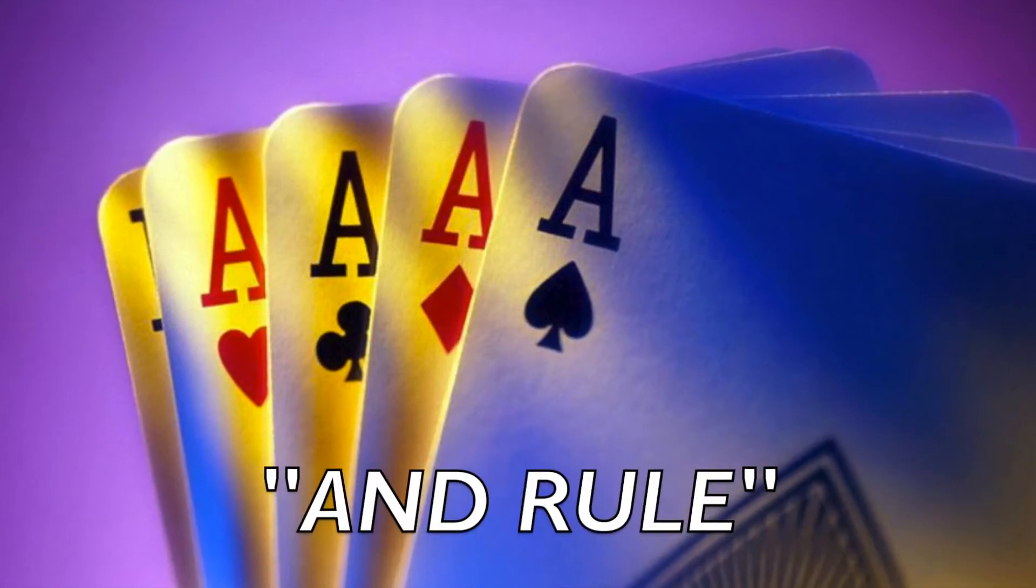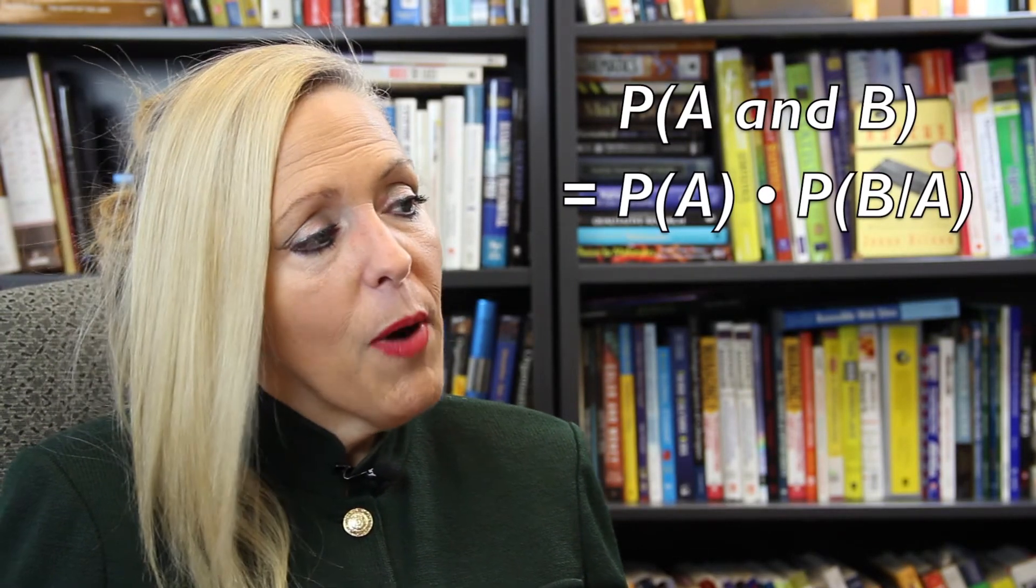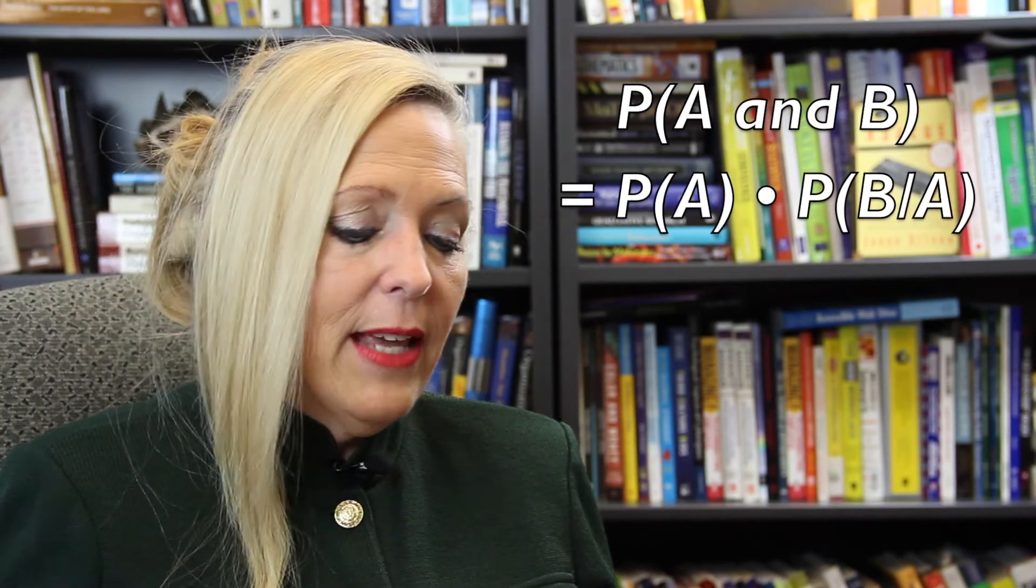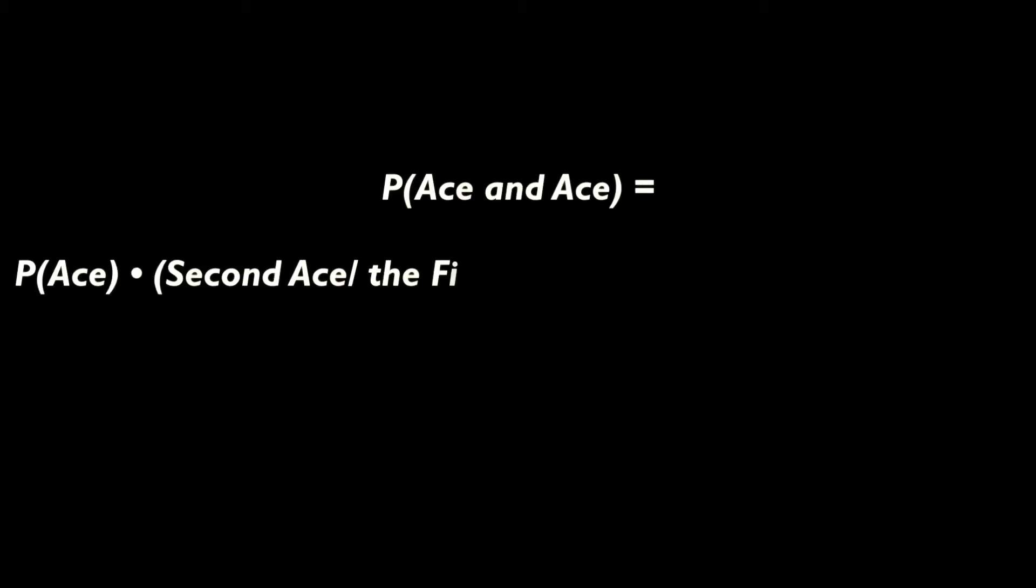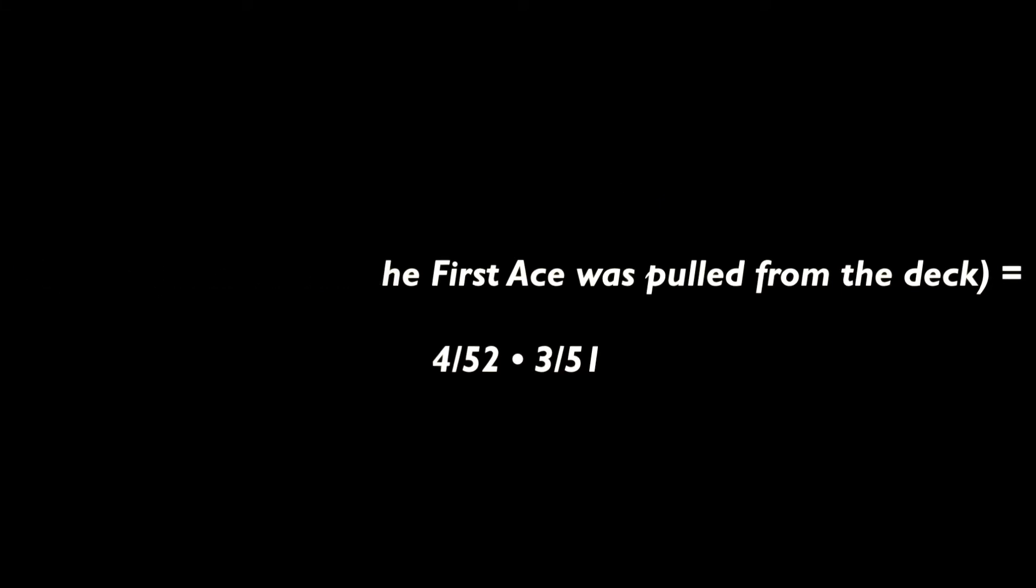Okay now, what is the probability of dealing two aces in a row? This requires the AND rule. The probability of A and B equals the probability of A times the probability of B given A. So the probability of getting an ace and then another ace is equal to the probability of getting an ace times the probability of getting an ace given that the first ace is no longer in the deck. This gives you 4 out of 52 times 3 out of 51. Notice in the second factor, there are only 3 aces left in the deck and only 51 cards, which you have to take into account in the AND rule.